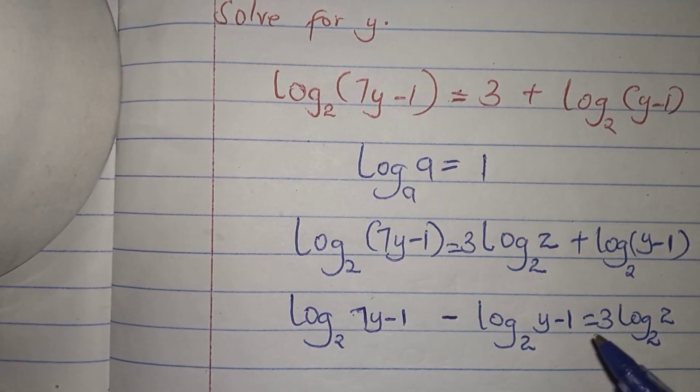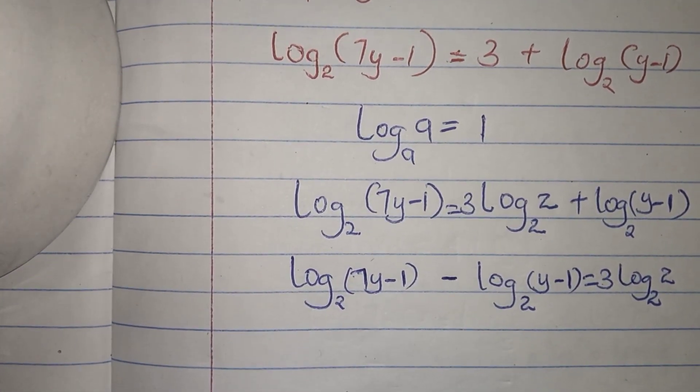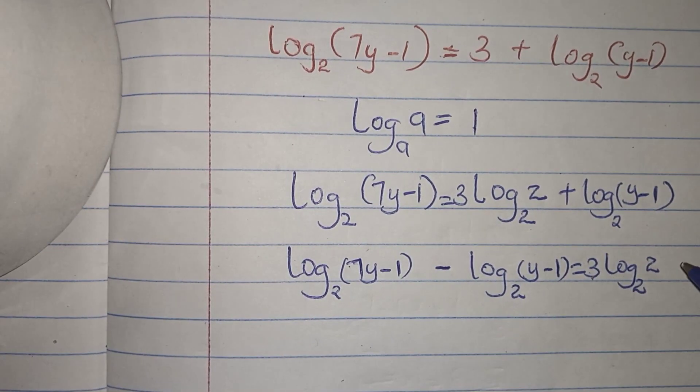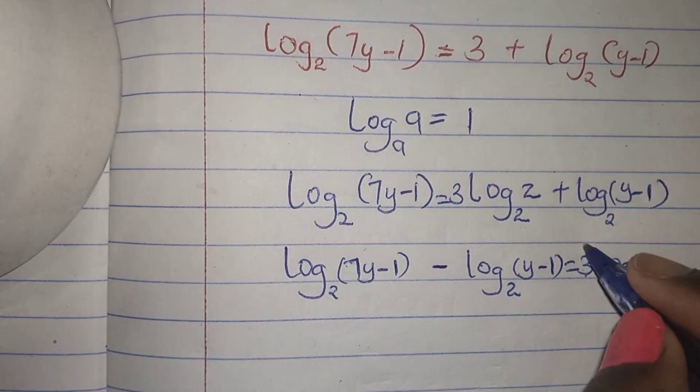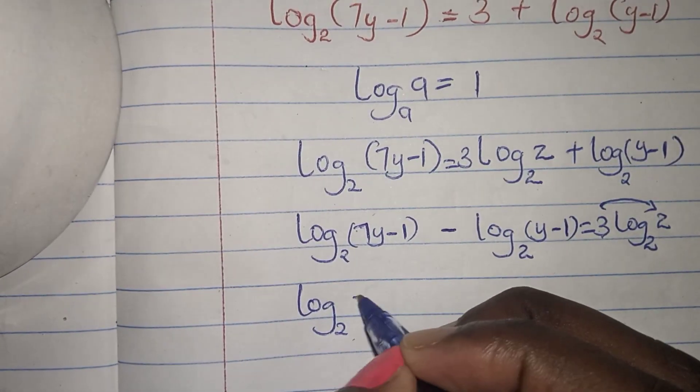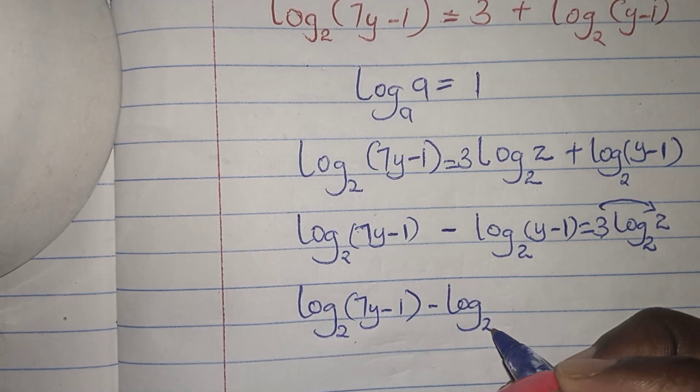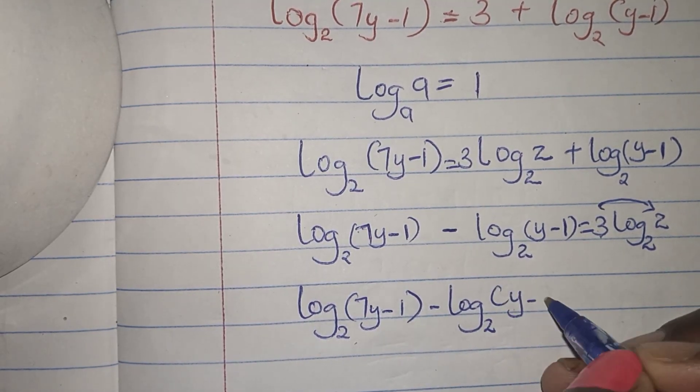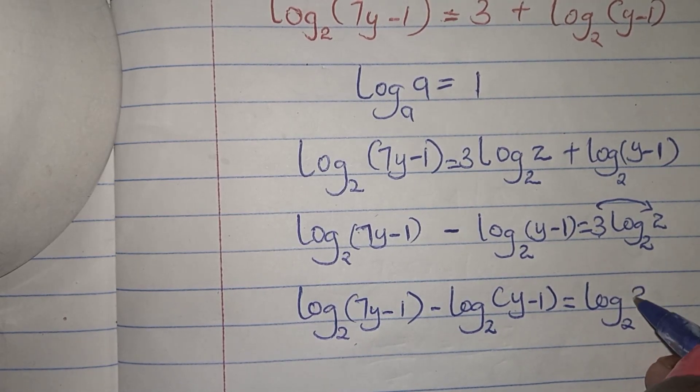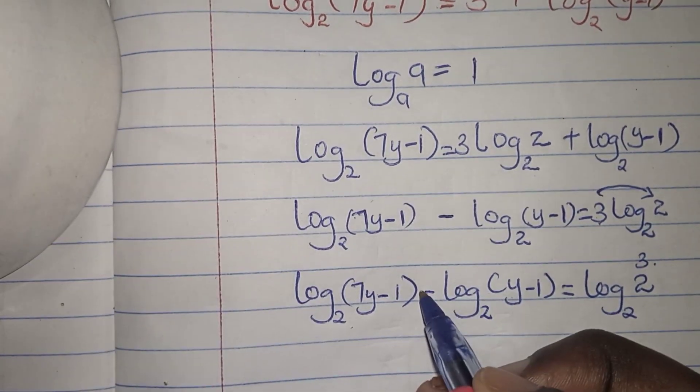Let me place this into bracket. If you remember this power law of logarithm, I'm going to bring this 3 on top of 2. So it will be log base 2 (7y - 1) minus log base 2 (y - 1) equals log base 2 of 2 to the power of 3.